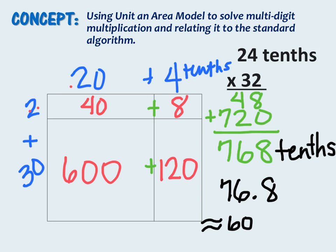So our estimate was approximately 60. Now if we look at these two answers, 768 and 76 and 8 tenths, we can see that 76 and 8 tenths is a much more reasonable answer than 768. So that is one reason to estimate before you multiply.